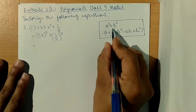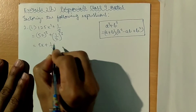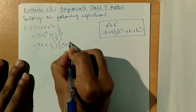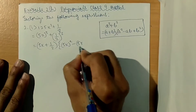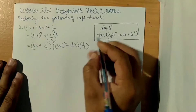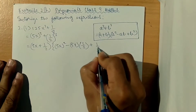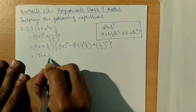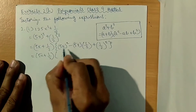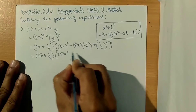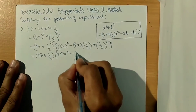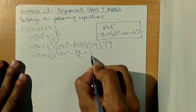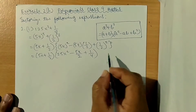So by using this formula, it will be: 5x plus 1 by 2, into 5x square minus 5x into 1 by 2 plus 1 by 2 square. This equals 5x plus 1 by 2 into 25x square minus 5x by 2 plus 1 by 4. So this is the answer.